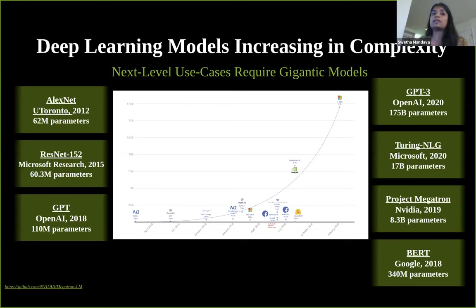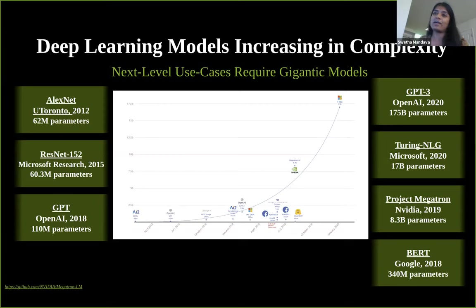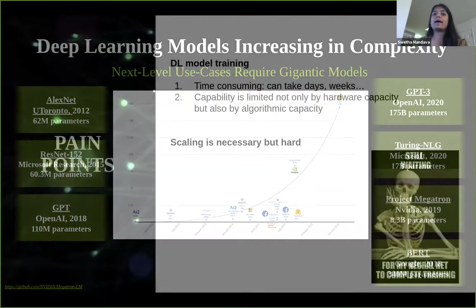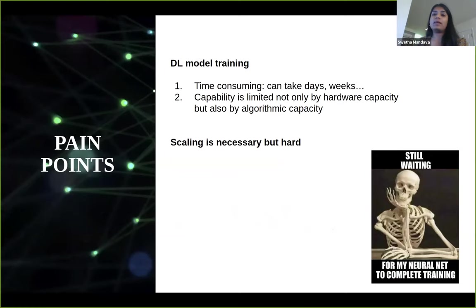In comparison, let's look at the scale of deep learning models today. AlexNet and ResNet have 60 million parameters. Since 2018, we've seen an exponential increase: GPT with 110 million, BERT with 340 million, Megatron with 8.3 billion. And it's only September and we already have GPT-3 with 175 billion parameters — almost 3,000 times the size of AlexNet. My talk today is about scaling your deep learning model to make your application effective and to improve your own efficiency and enable an experimentation culture.